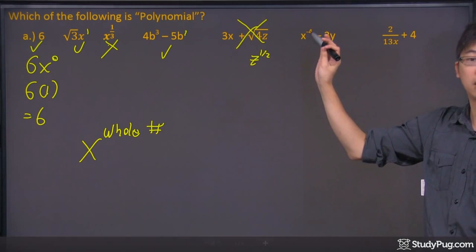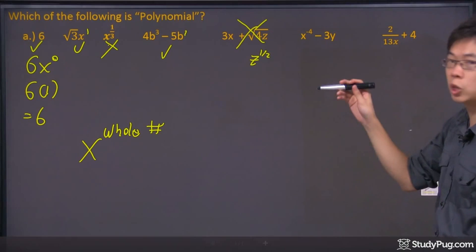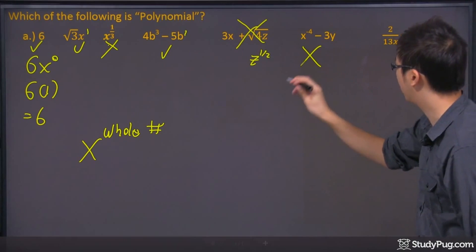Oh, that one's kind of obvious. It's at a power of negative 4, and it's not a polynomial. So there's a little cross right there.